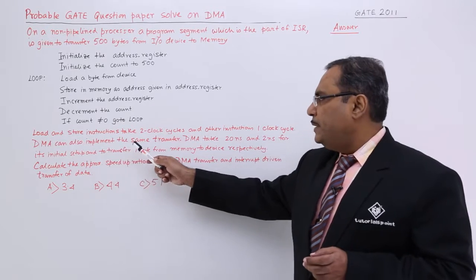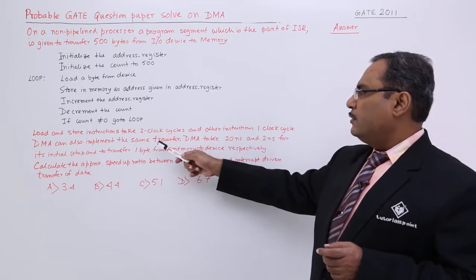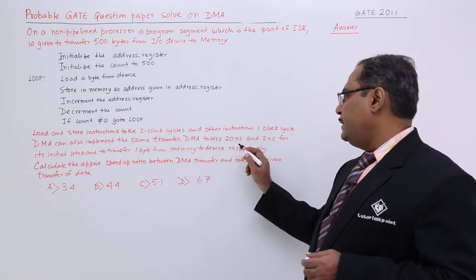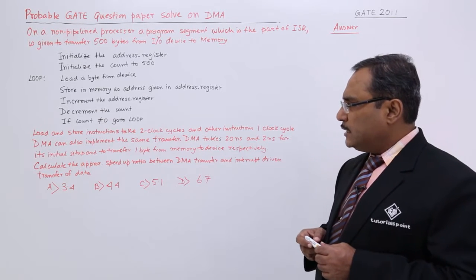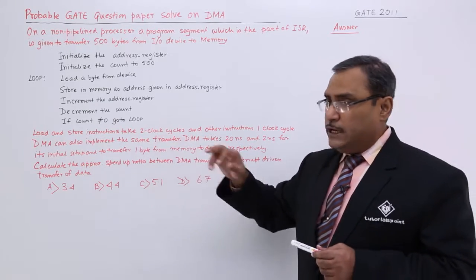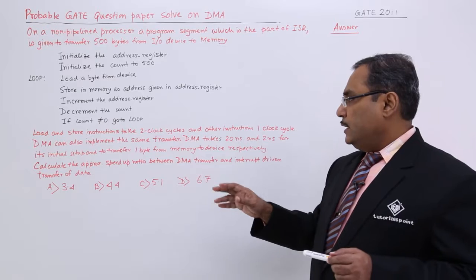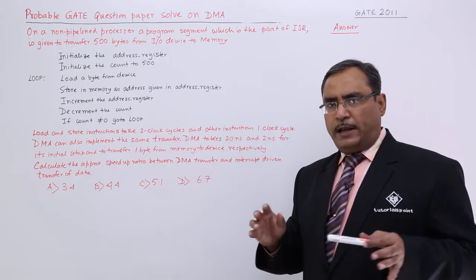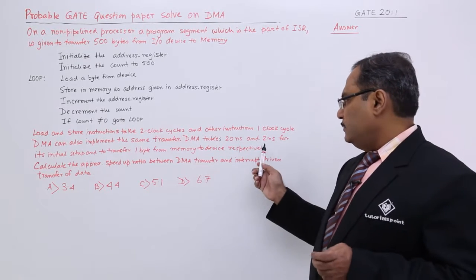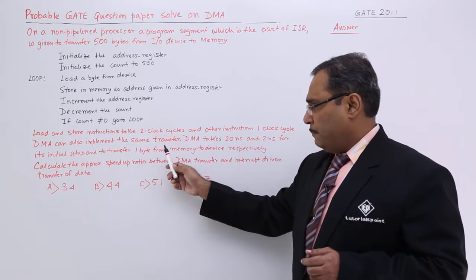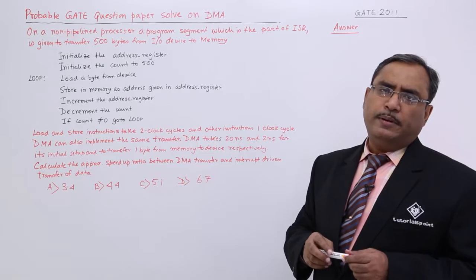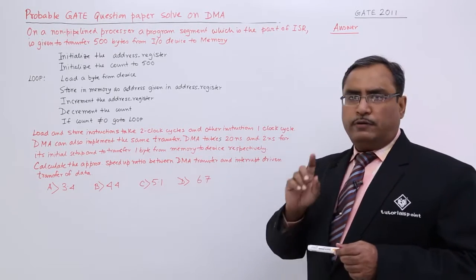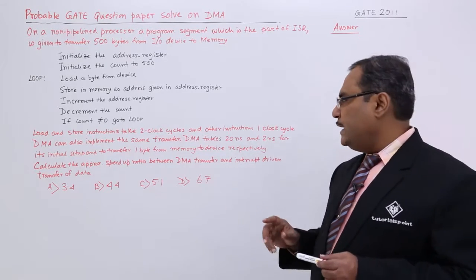DMA can also implement the same transfer. DMA takes 20 nanoseconds for its initial setup and preparation — irrespective of the volume of data to be transferred — and 2 nanoseconds to transfer 1 byte from memory to the device or from the device to memory.